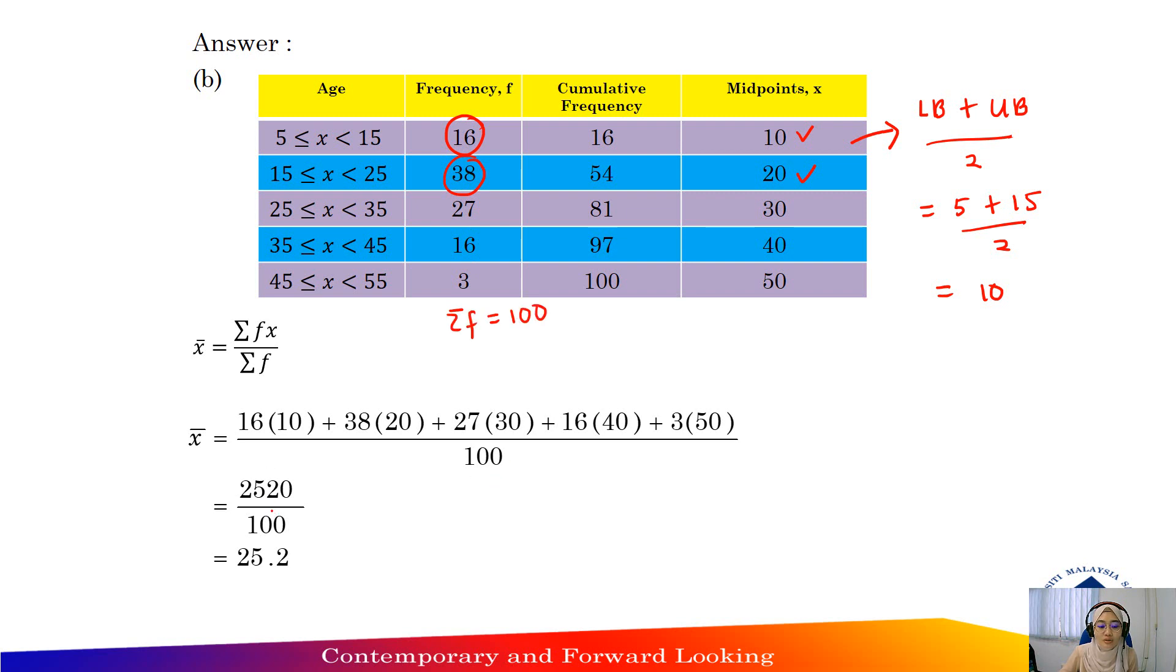Divide by total frequency. So total frequency here is 100. So 2520 divided by 100, you will get 25.2 for mean.